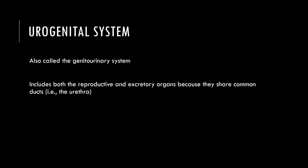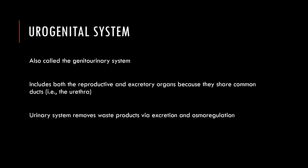The urogenital system — what is it? It's also called the genitourinary system because it includes both the reproductive and excretory organs. This is due to the fact that they tend to share common ducts such as the mesonephric duct or the urethra. The urinary portion involves the removal of waste products via osmoregulation and excretion, and the genital portion involves the male and female reproductive tracts.